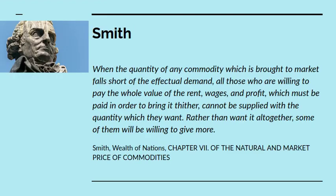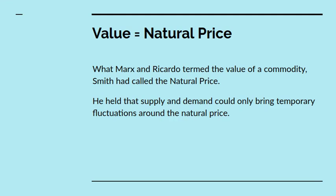And Adam Smith before that said, when the quantity of any commodity which is brought to market falls short of the effectual demand, all those who are willing to pay the whole value of the rent, wages and profit, which must be paid in order to bring it thither, cannot be supplied with the quantity they want. Rather than want it altogether, some of them will be willing to give more. Now, you have to realize that in Smith the term natural price corresponds to what Ricardo and Marx called value. And Smith held that supply and demand could only bring temporary fluctuations around the value.